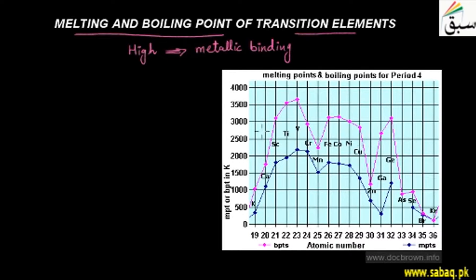Looking at the graph: from scandium to vanadium, both melting point and boiling point increase. Then there is a decrease at chromium, and again a dip at manganese. Then iron increases, cobalt increases, and from nickel through zinc we see a decrease.